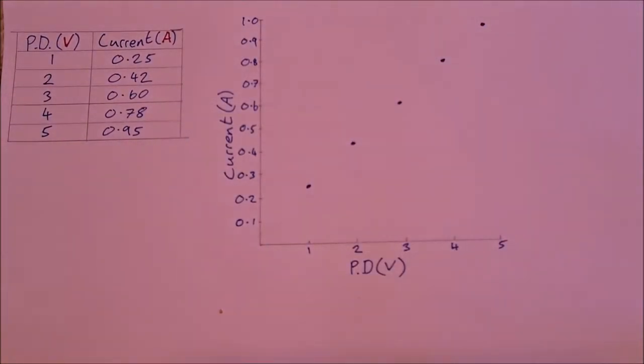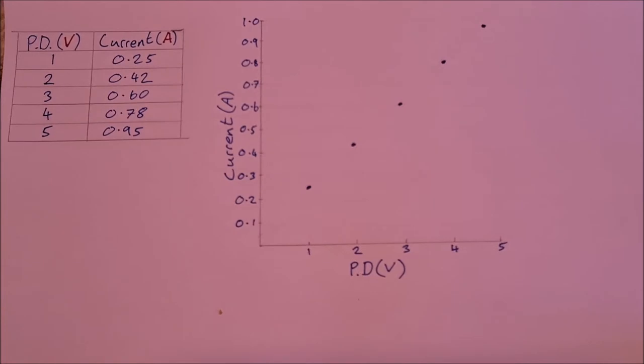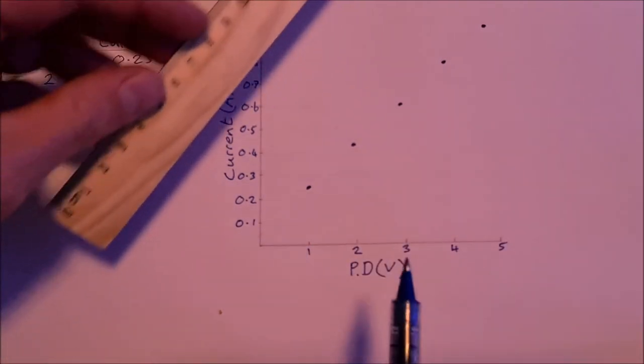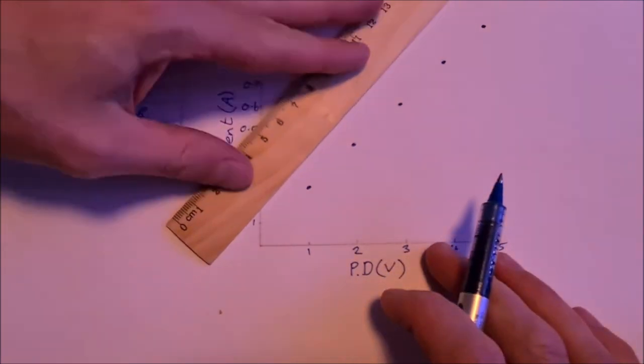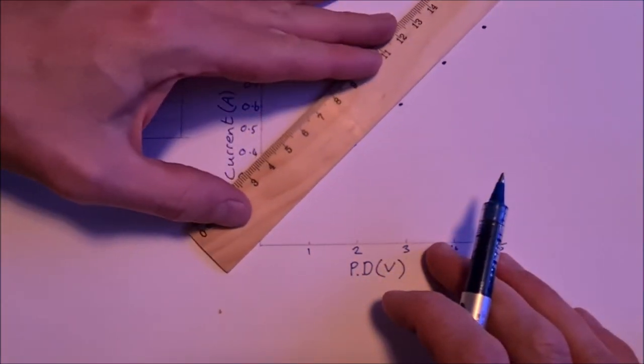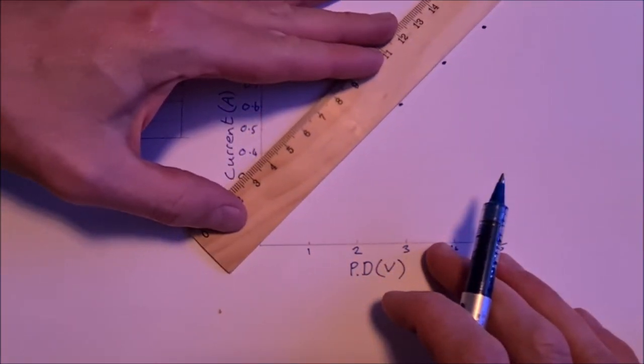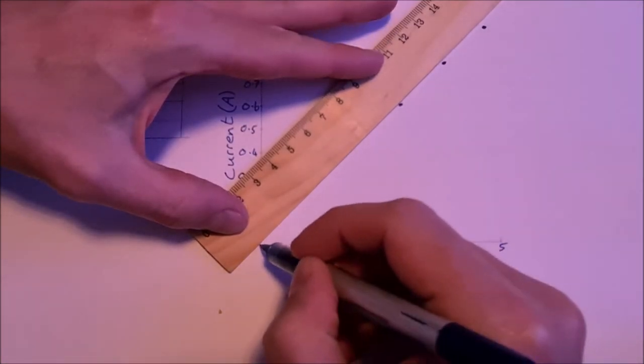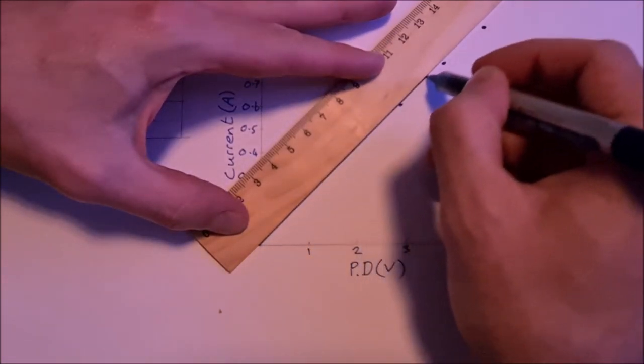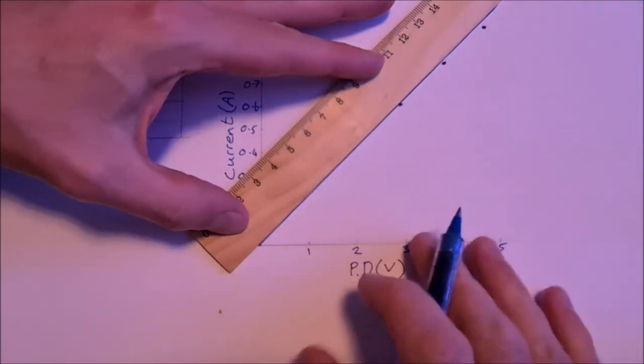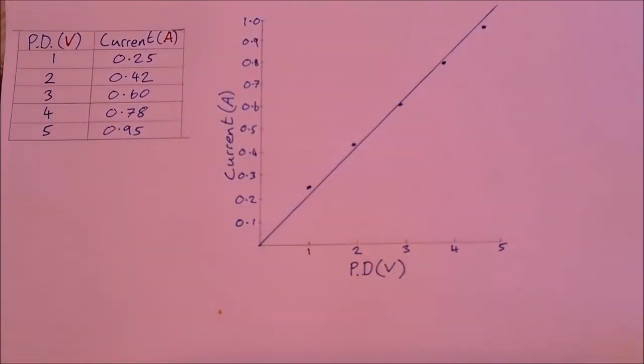So we can see there that this is a bit of a straight line here, so we can draw in a line of best fit. And we can see that it kind of goes through the origin, and it's very close to it, if not perfectly through the origin like so.